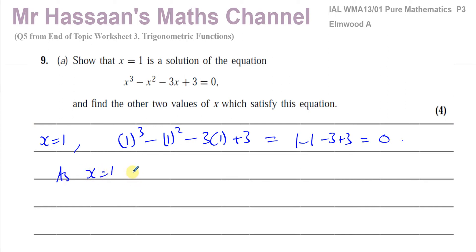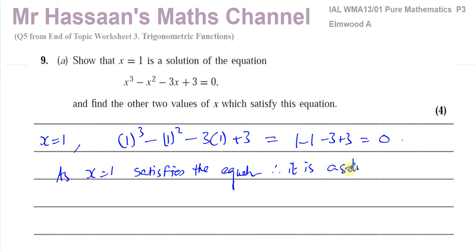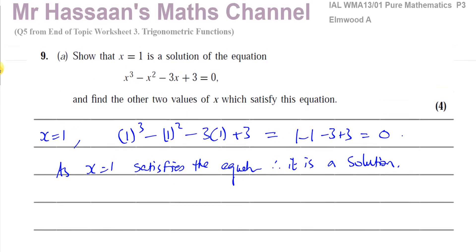That gives us 1 - 1 - 3 + 3, which equals zero. So x = 1 satisfies the equation and is therefore a solution. You don't even need to write much here — just show it equals zero. Then part (a) also says: find the other two values of x which satisfy the equation.